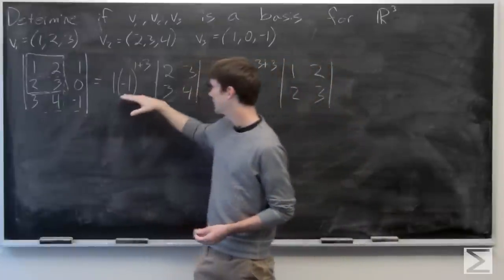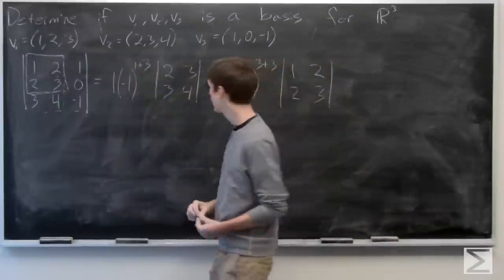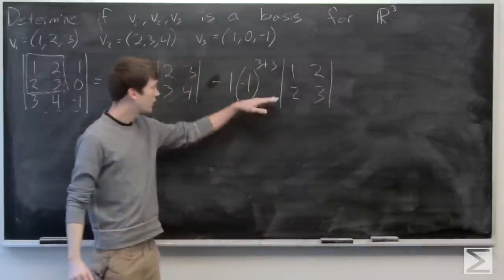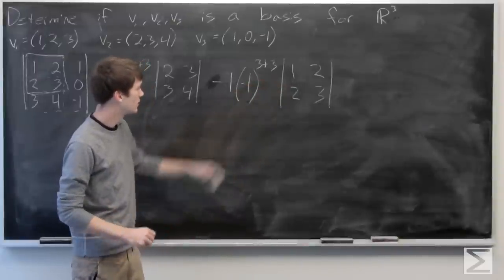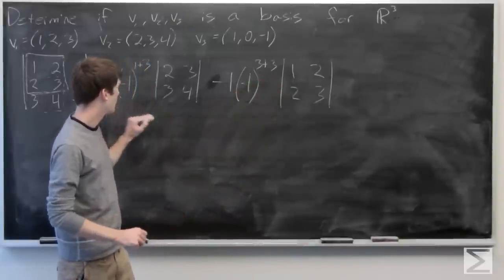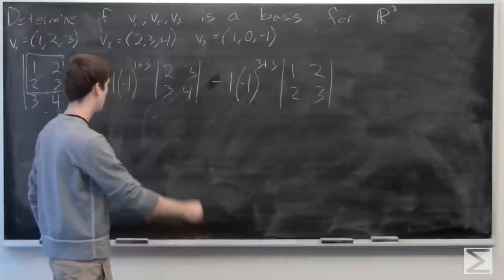So we see that our negative 1 is raised to the power of 4, so that's positive 1. And again, over here, we have negative 1 raised to the sixth, so that's positive 1. So we have 1 times the determinant of 2, 3, 3, 4,